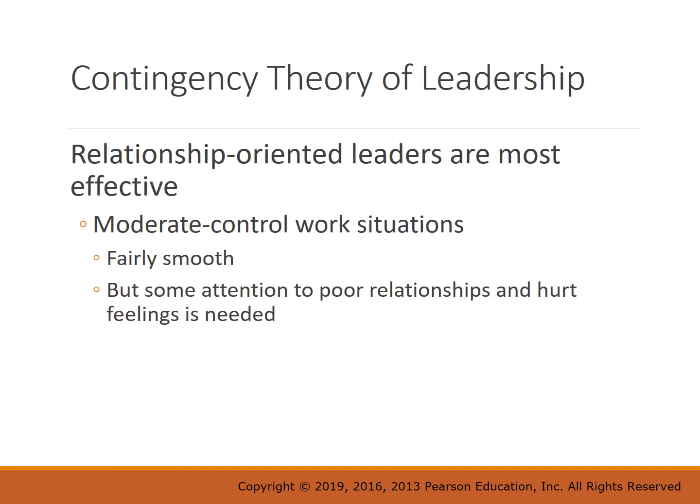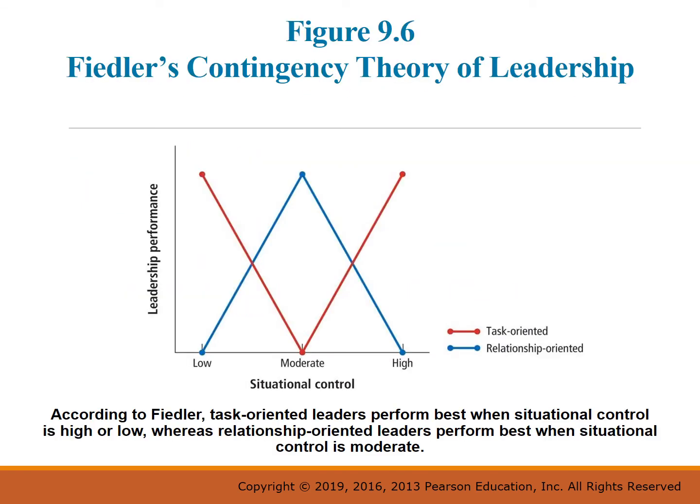Task-oriented leaders are most effective in high-control work situations — where leader-member relationships are excellent and the work is very structured and well-defined — and in low-control work situations, where relationships may be poor and the work to be done is not clearly defined. Relationship-oriented leaders are most effective in moderate-control work situations, where relationships are fairly smooth but some attention is needed. On the graph, leadership performance is high for task-oriented leaders at low or high situational control, and high for relationship-oriented leaders at moderate situational control.